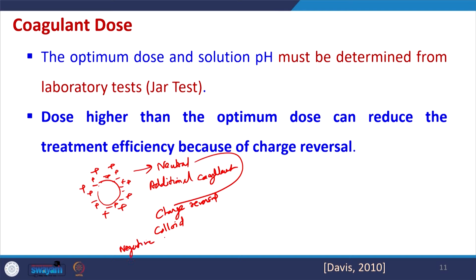This is not desirable and is called charge reversal — it occurs if we add coagulants beyond the optimum dose. In most water and wastewater treatment plants there are laboratories where they perform tests very regularly, and these tests are called jar tests. In the jar test, on the same platform, different beakers are kept and different amounts of coagulants are added to each beaker.